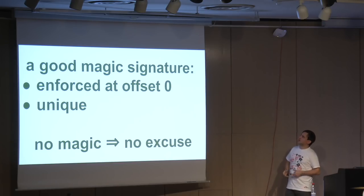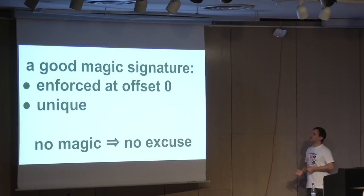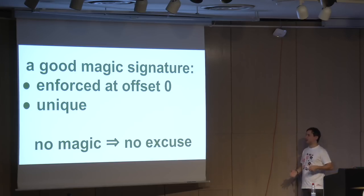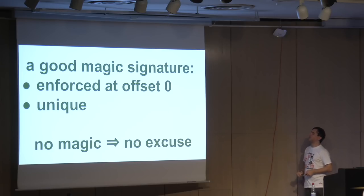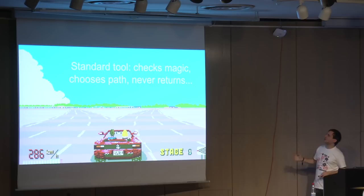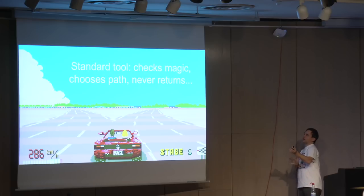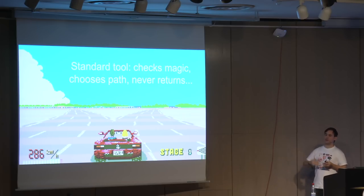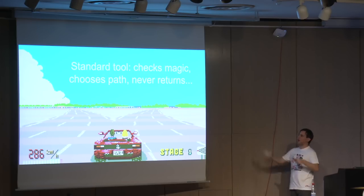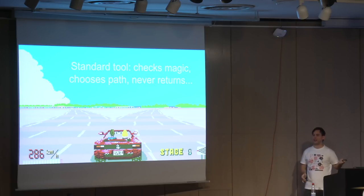In general, a good magic signature should be enforced at offset zero and be unique. If you create a new file format, please respect this rule, because otherwise it can lead to abuses. A standard parsing tool just checks the magic, then chooses a path and will never return and try something else. It found the signature, chose a path, and will ignore any other file type that could be included in the same file.